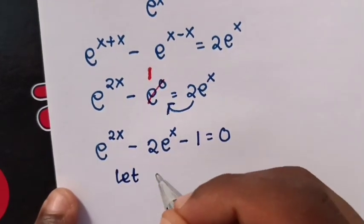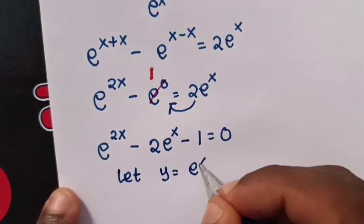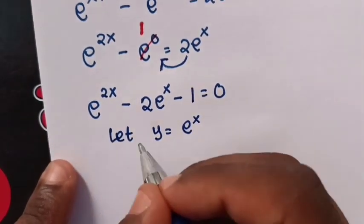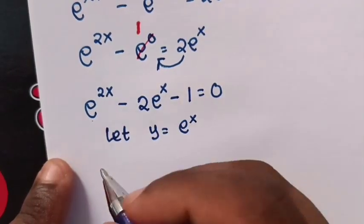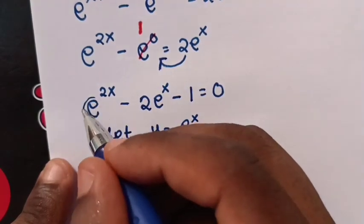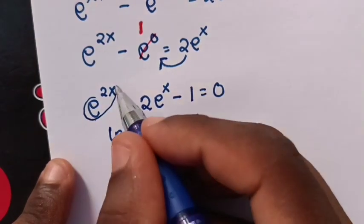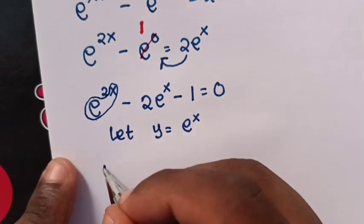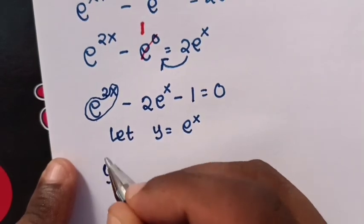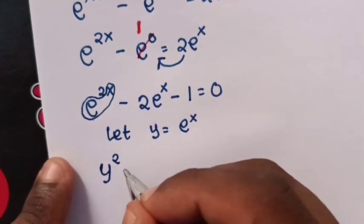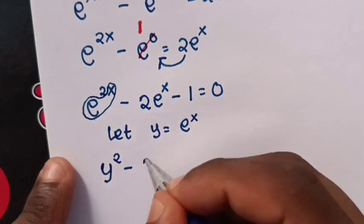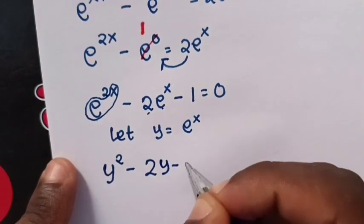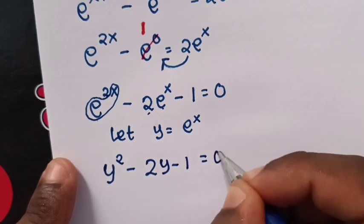Next step, we let y equals e power x. Then we substitute y into the equation, so it becomes y squared minus 2y minus 1 equals 0.